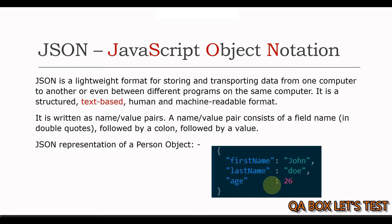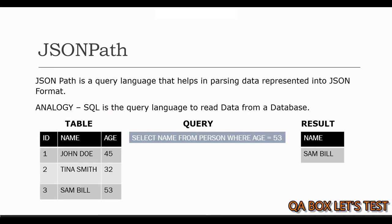This example shows a possible JSON representation describing a person. Now, what is JSON path? JSON path is a query language that helps in parsing data represented in JSON format. To understand this better, let's take an analogy of reading data from an RDBMS table using SQL.